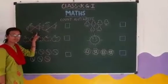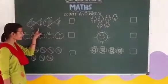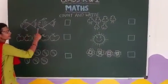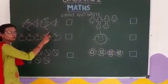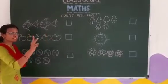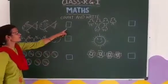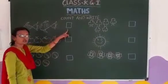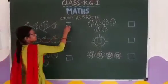How many fishes are here? 1, 2. 2 fishes. So we will write 2 here.